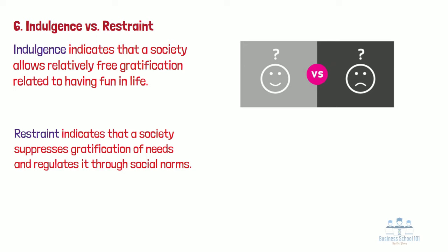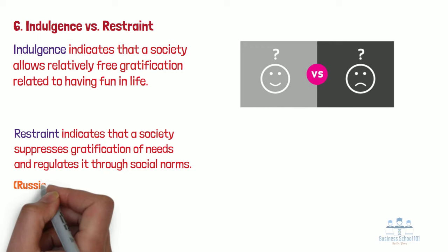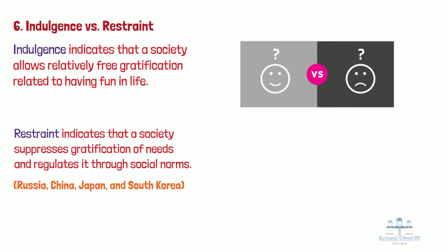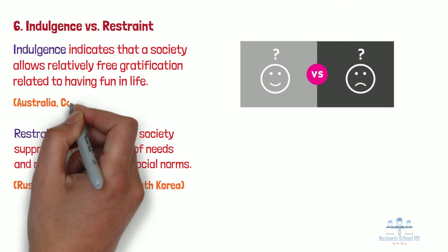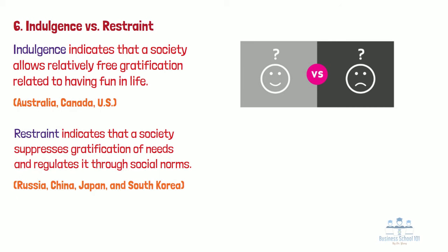In a high indulgence country, freedom of speech is highly valued and people are more likely to experience positive emotions. In a low indulgence country, however, there is often a more visible police force and maintaining national order is a higher priority. Countries in Eastern Europe, including Russia, and some Asian countries have low indulgence ratings, indicating a restrained culture. Often in these countries there is a pervading idea that indulgence is somewhat wrong. While much of Western Europe falls in the middle, most Anglo-Western nations have a high indulgence rating, indicating that individuals tend to place a higher importance on leisure and tend to act and spend money as they please.